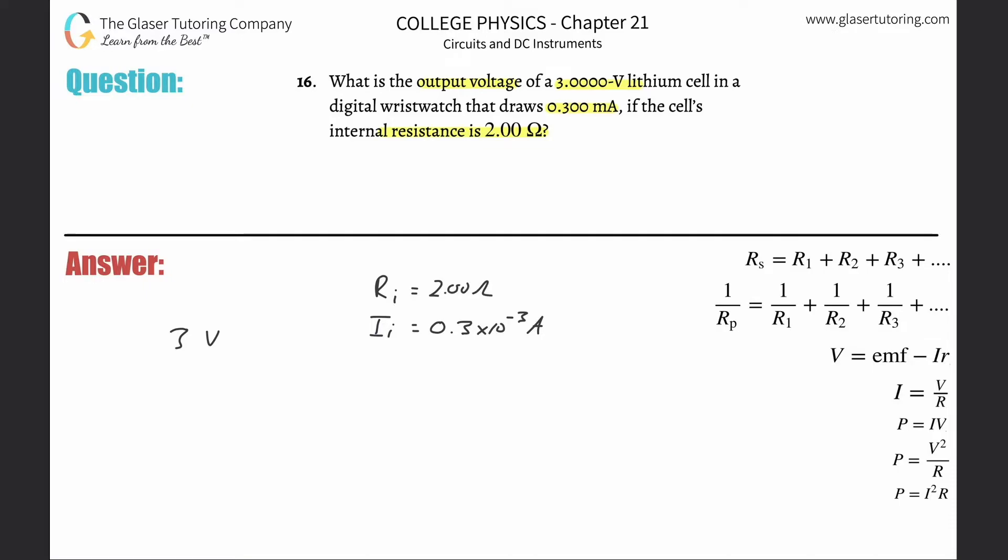Couldn't I simply calculate the actual voltage lost inside the battery by using Ohm's law? Sure, because we know that V = IR. So I can just plug this in. This is 0.3 times 10 to the minus 3 times 2. This is going to be 0.6 times 10 to the minus 3, and that'll be in volts.